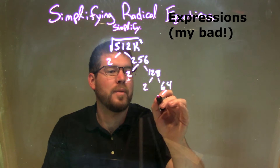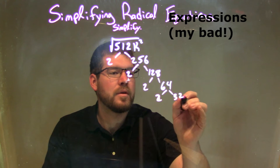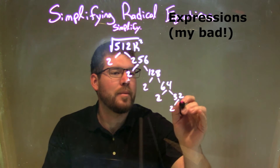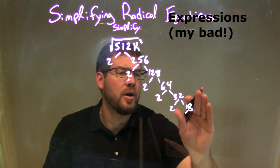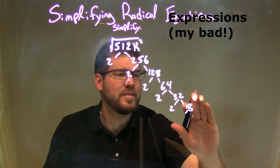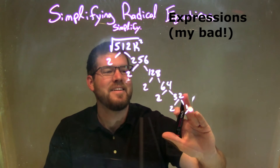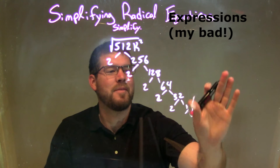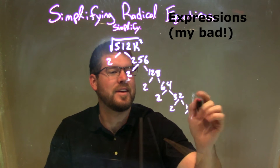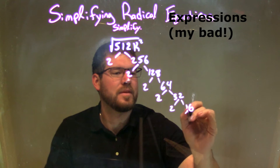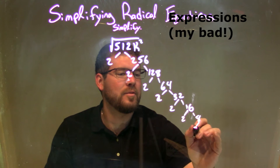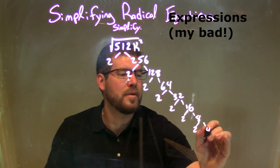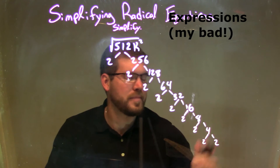64 divided by 2 is 32. 32 divided by 2 is — no, 16. Getting ahead of myself there. 16 is 2 and 8. 8 is 2 and 4. And 4 is 2 and 2.